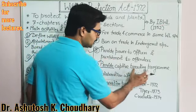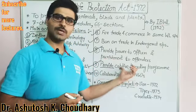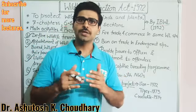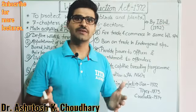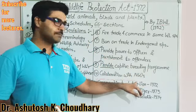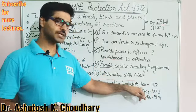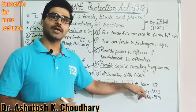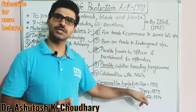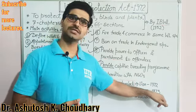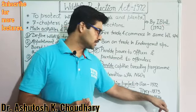The tenth point is the provision for captive breeding programs. Captive breeding programs aim to maintain the population of wild animals such as lions, tigers, elephants, and crocodiles. In 1972 a project was started for the lion to maintain its population. Project Tiger was started in 1973, and after that Project Crocodile was started in 1974.